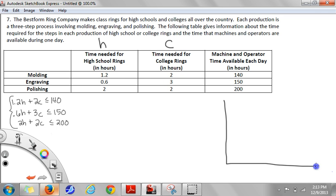So I'm going to draw my first quadrant, and I only need the first quadrant since negative values in this situation wouldn't make any sense. I'm going to put h on the x-axis and c on the y-axis. And before determining what my scale should be, I'm going to go ahead and find my intercepts. That will give me a good idea of how high I need to go on each axis. So I'll start with the molding.